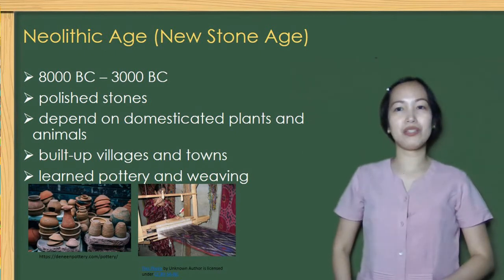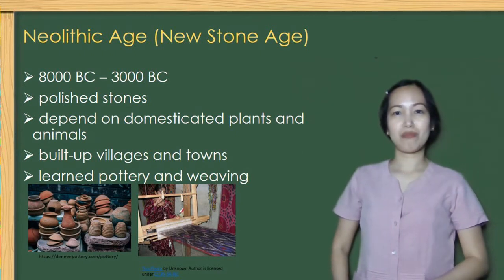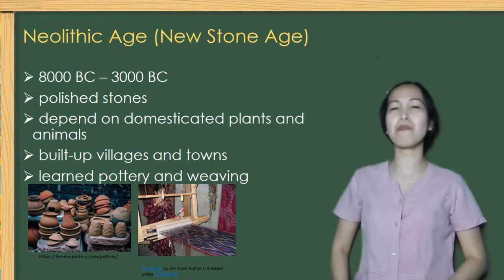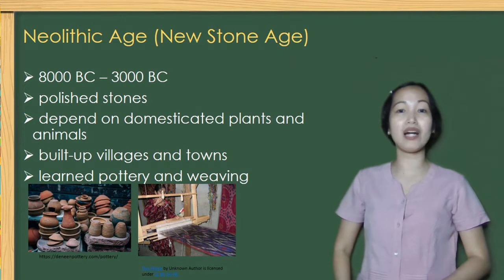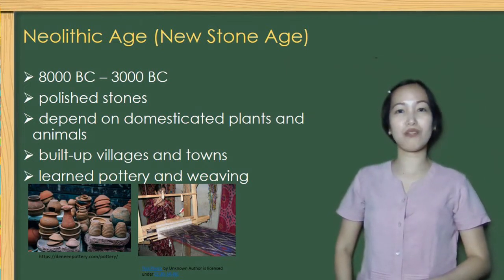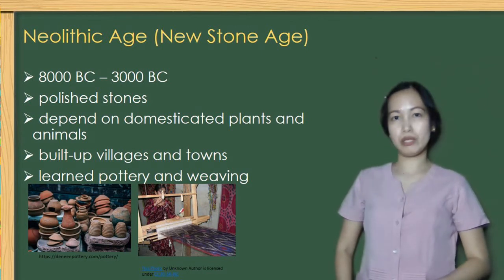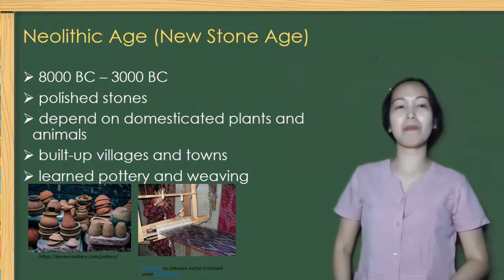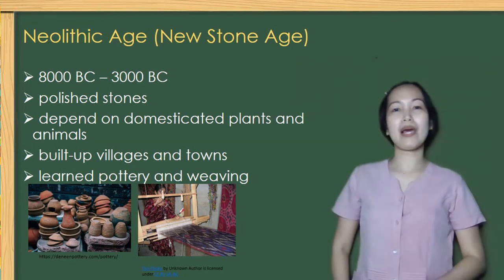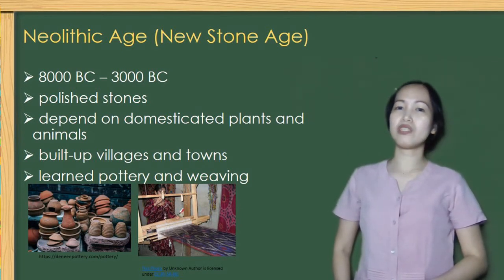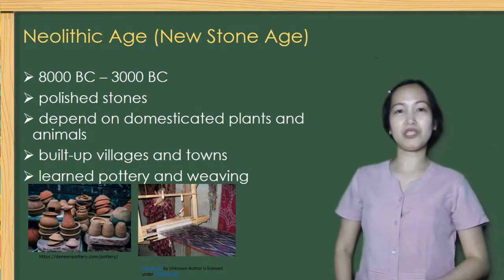The next period is the Neolithic Age. During this period, there was a wide-scale transition of many human cultures from a lifestyle of hunting and gathering to agriculture and settlement, which eventually led to a population increase. The people in this era used polished stone, domesticated plants and animals, built up villages and towns, and learned pottery and weaving.